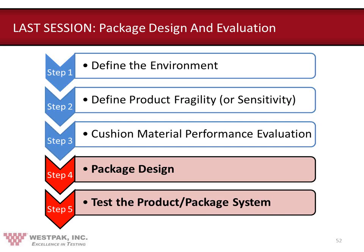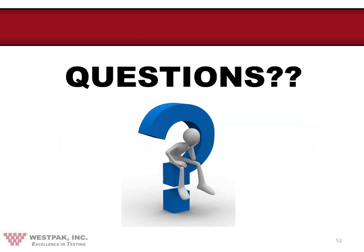That's the end of our webinar on the evaluation of cushion systems. During the next webinar, we'll talk about the actual design of a package system and spend a lot of time on testing the product-package system. Greg, are there any questions? We do have a few. The first question: how do you account for compressive creep of some cushion materials such as EPE when designing a cushion system with ribs?